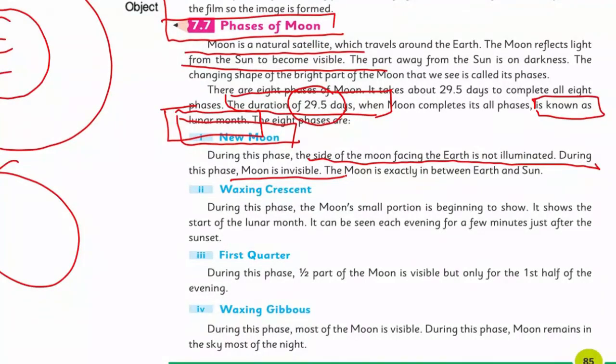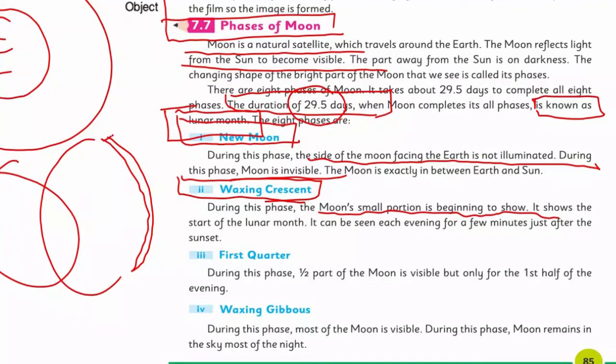When you wait for Eid and people testify that I have seen the moon, and after that the Khateeb announces from Islamabad, this process looks at the new moon. As soon as it becomes slightly visible, we call it waxing crescent. During this phase, moon's small portion is beginning to show. Very thin, very thin, it starts becoming visible to us.